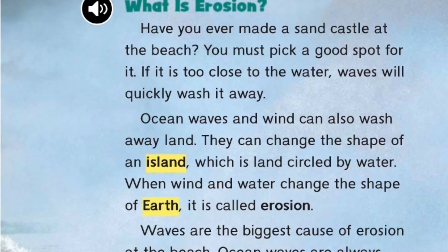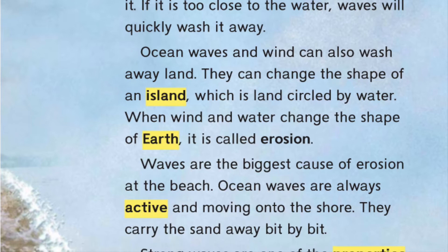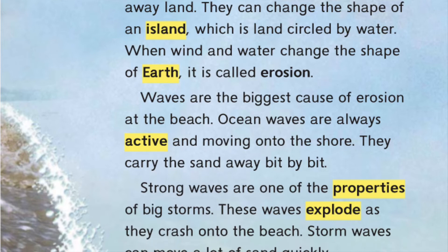Ocean waves and wind can also wash away land. They can change the shape of an island, which is land circled by water. When wind and water change the shape of earth, it is called erosion. Waves are the biggest cause of erosion at the beach.